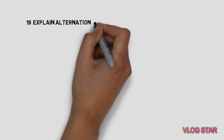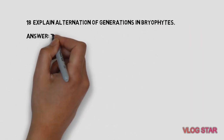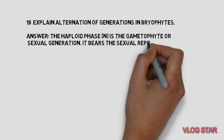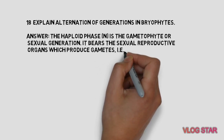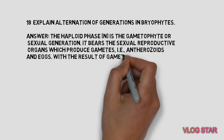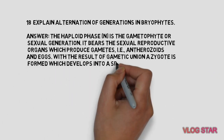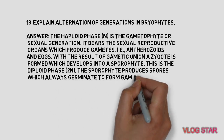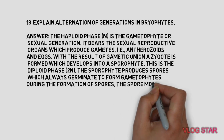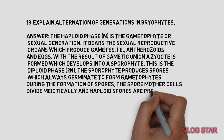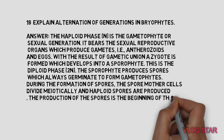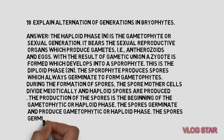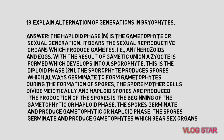Explain alternation of generations in bryophytes. The haploid phase (n) is the gametophyte or sexual generation, bearing reproductive organs that produce gametes — anthrozoids and eggs. Gametic union forms a zygote that develops into a sporophyte, the diploid phase (2n). The sporophyte produces spores through meiotic division of spore mother cells, producing haploid spores. These spores germinate to form gametophytes, which bear sex organs, completing the alternation of generations.